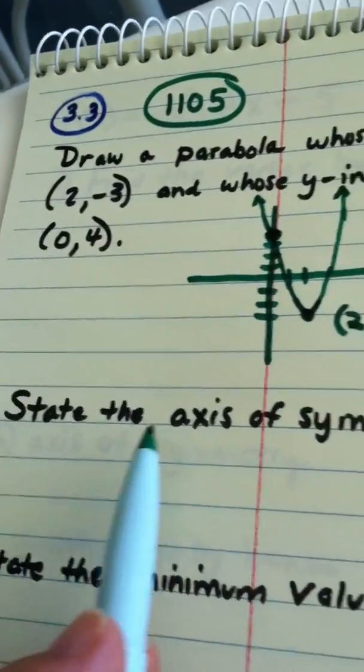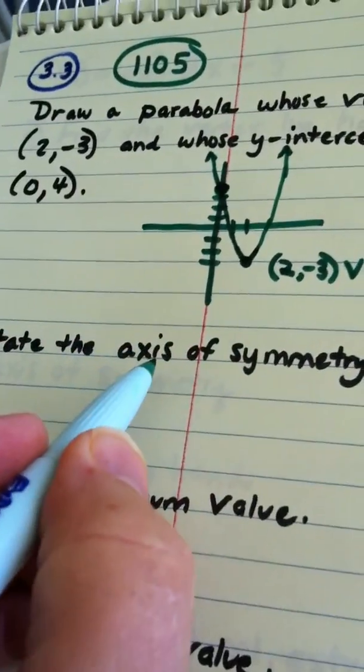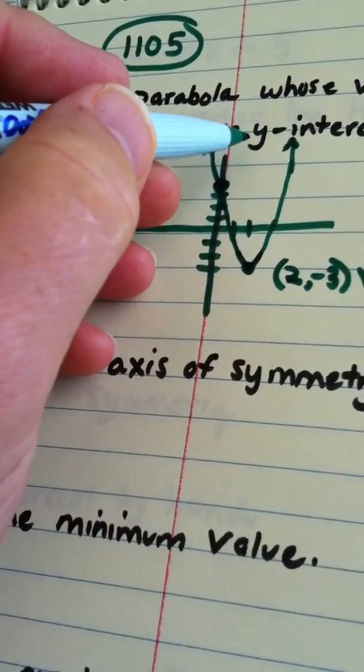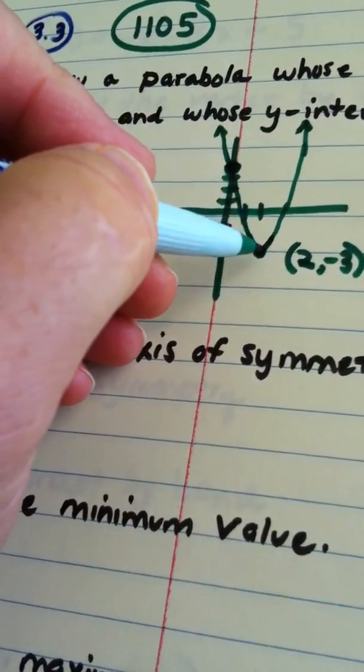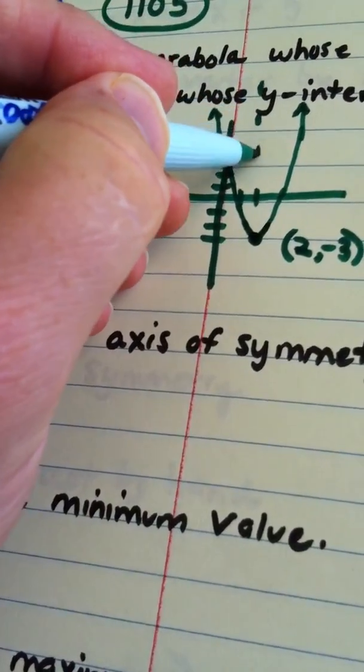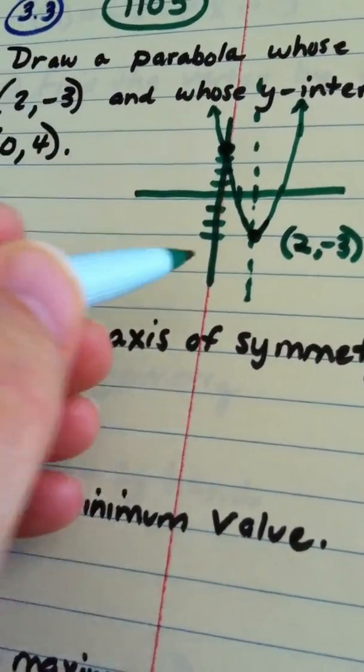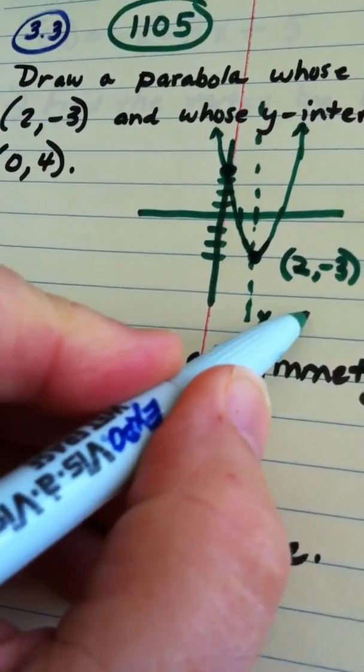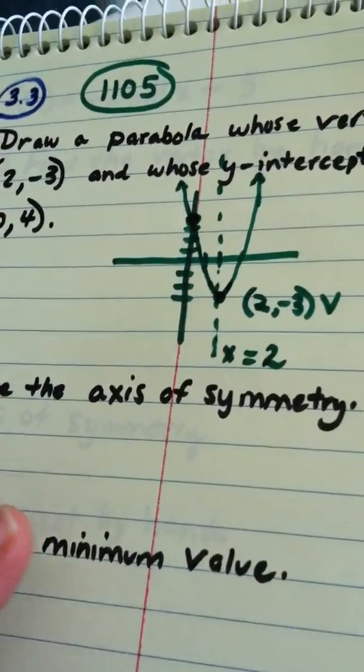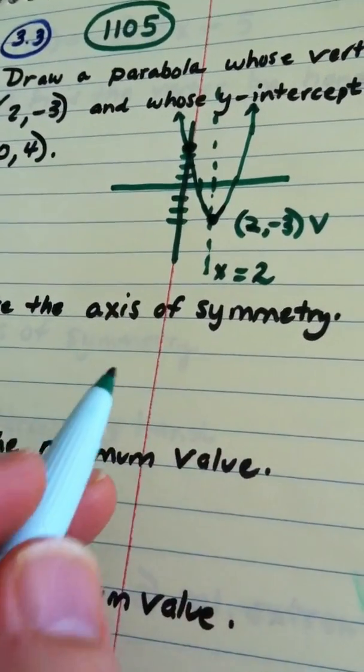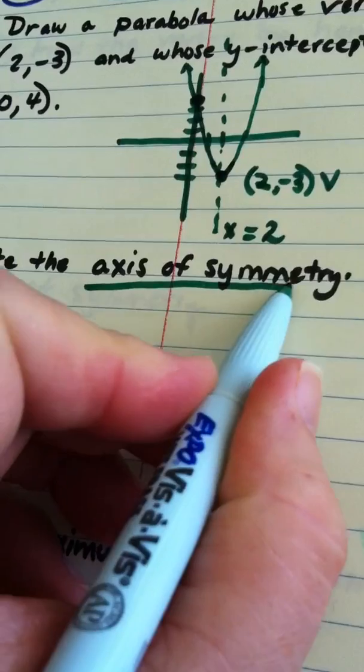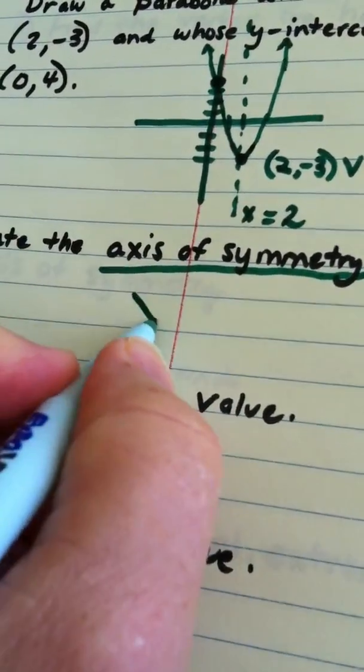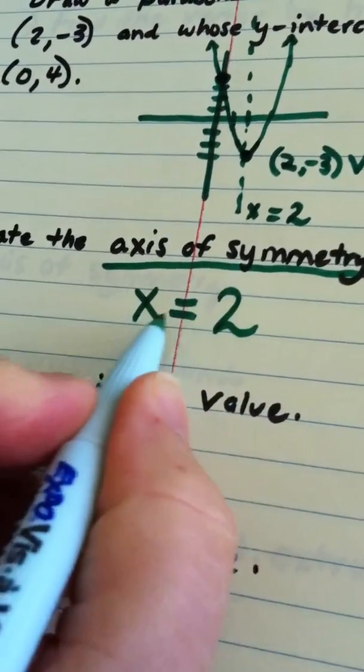Okay, the next question says, state the axis of symmetry. The axis of symmetry is the imaginary vertical line that goes through the parabola, rather through the vertex of the parabola. I'm going to dot it in here, and, of course, that would be the line where the x value is 2. The equation of that line is x equals 2. The axis of symmetry is not the number 2. An axis of symmetry is the equation of the vertical line passing through the vertex. So, my answer would be x equals 2.